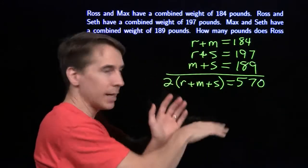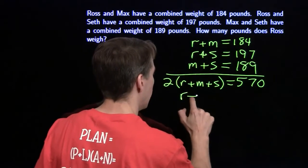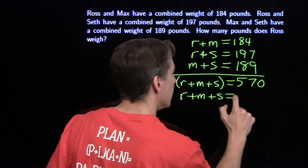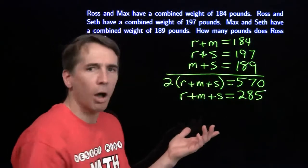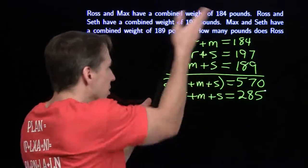Now I'm going to divide both sides here by 2 and get R plus M plus S. The sum of all three is 285. And now I can just read off R, M, and S by combining this with these up here.